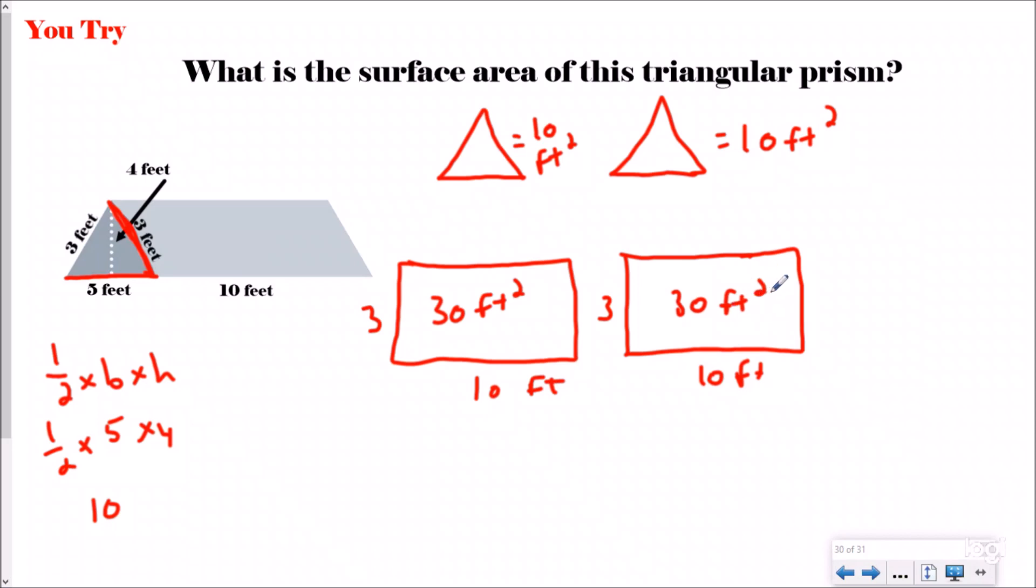But I need to have one more because a triangular prism has five sides. So I'm going to erase all of this so I have more room. The base of this is going to be a little bit bigger rectangle.